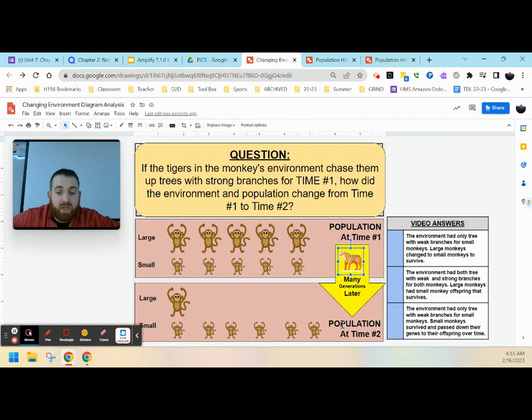Now, if you look at time two for our population, it has changed. We now have very few large monkeys, and we have a lot of small monkeys making up the population. So we have to decide how did the environment and population change from time one to time two. Let's go ahead and take a look at our options.